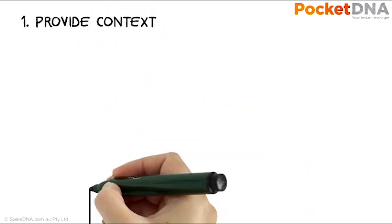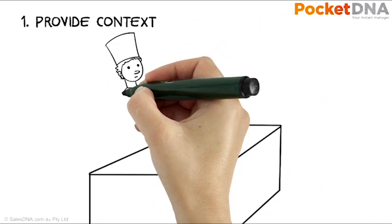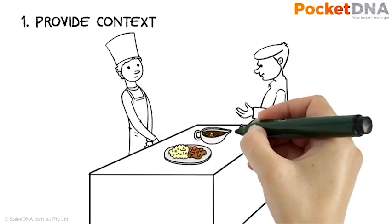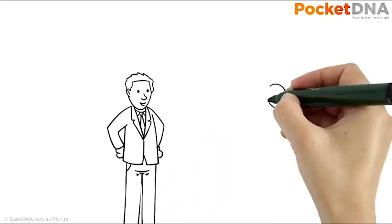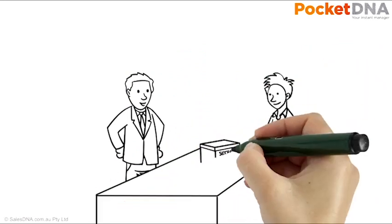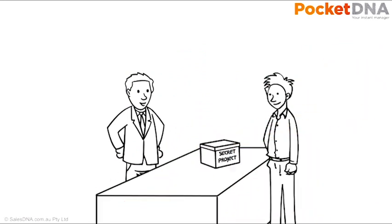If you're providing feedback, the first step is to provide a staff member with the appropriate context. In a reality cooking show, for example, such feedback will almost certainly be about the dish they're making. In the work environment, you need to provide the context that sets the scene for the comments you're about to make.